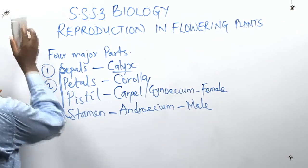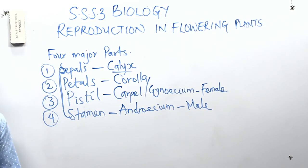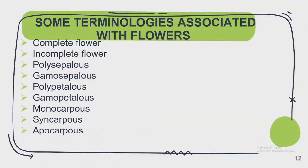Now that we know the parts of flowers and their functions, we move to terminologies. In reproduction in flowering plants, there are numerous terminologies. We'll be looking at: complete flower, incomplete flower, polysepalous, gamosepalous, polypetalous, gamopetalous, monocarpous, syncarpous, and apocarpous. Note that spellings are very important in biology.